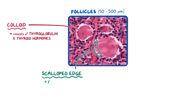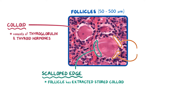The scalloped edge is where the follicle has extracted some of the stored colloid in preparation for hormone activation and secretion. On the other hand, the clear space around the colloid is just an artifact caused by the colloid shrinking in comparison to the follicular wall.